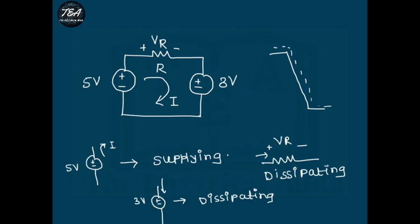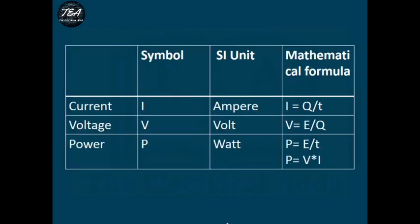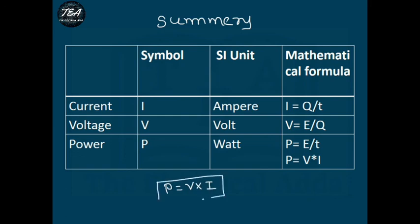Using this sign convention method in any network, we can determine which elements are supplying power and which are dissipating power. To summarize what we have covered in this lecture: we saw current, voltage, and power in electrical circuits and how they are related to each other by the relationship P = V × I.